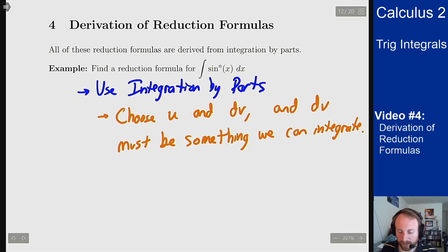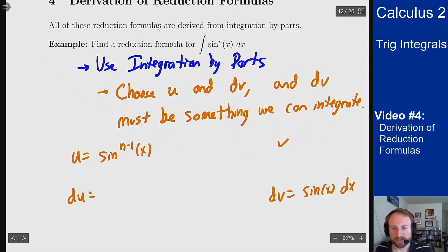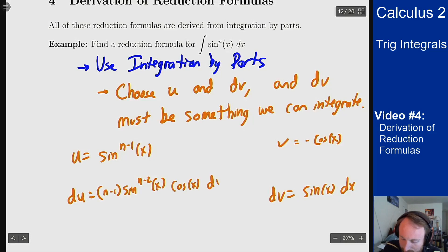That gives us the following for our table. Now we can fill in the rest. Well since dv is just sine, v is then minus cosine. And for du I can find that derivative using the power rule and the chain rule. It'll be n minus 1 sine to the n minus 2 of x and then chain rule times cosine of x dx.